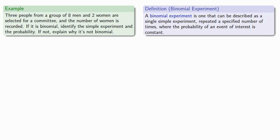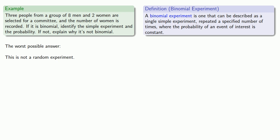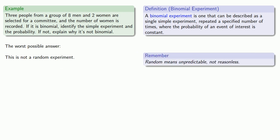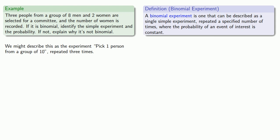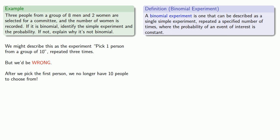Suppose we pick three people from a group of eight men and two women to serve on a committee, and the number of women is recorded. Is this a binomial experiment? The worst possible answer would be that this is not a random experiment because the people are chosen. While that's true, remember that random means unpredictable, not reasonless. Since we don't know in advance who will be chosen, this is a random experiment. We might try to describe this as picking one person from a group of ten repeated three times, but after we pick the first person, we no longer have ten people to choose from. So this is not a binomial experiment.